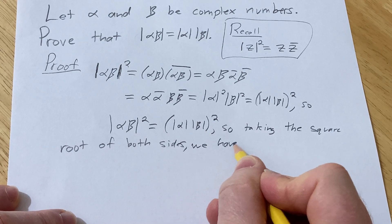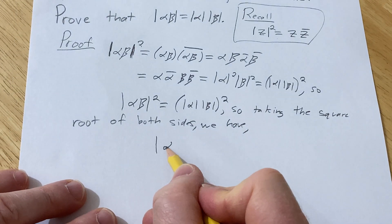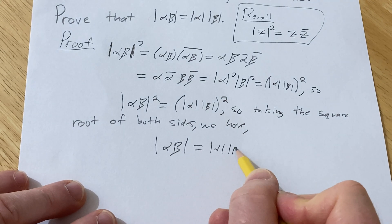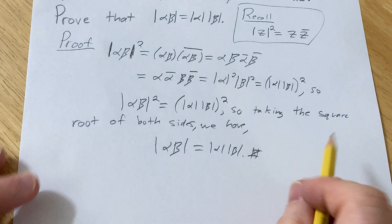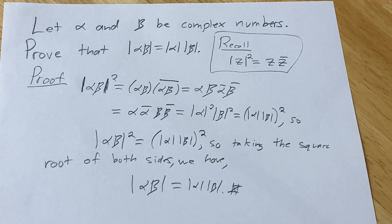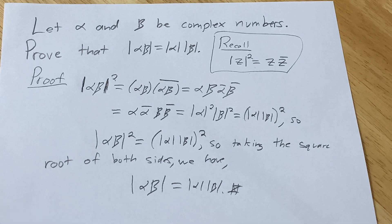we have the modulus of alpha beta is equal to the modulus of alpha times the modulus of beta, which is what we intended to show from the very beginning. So that's it. I hope this proof has helped someone out there in the world who is learning a little bit of mathematics. Good luck.